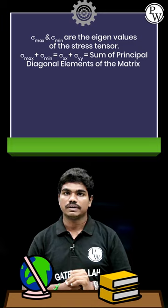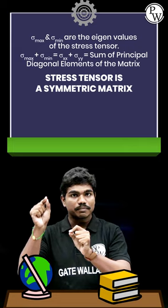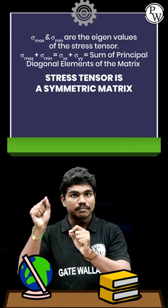And if you observe one thing, stress tensor is a symmetric matrix. And if you calculate the principal stresses for this matrix, you always get real numbers, which is again resemblance of one property that eigenvalues of a real symmetric matrix are always real.